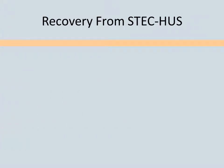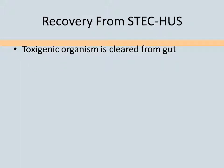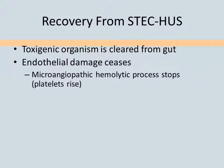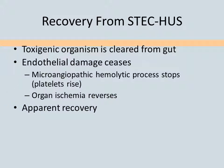For the rest of this talk, we'll focus primarily on STEC-HUS, the most common pediatric form. The first step in recovery is clearance of the toxin and organism. This allows the microangiopathic process to cease. Once clotting stops, the thrombi can dissolve and organ damage can heal. The child can then regain kidney function.